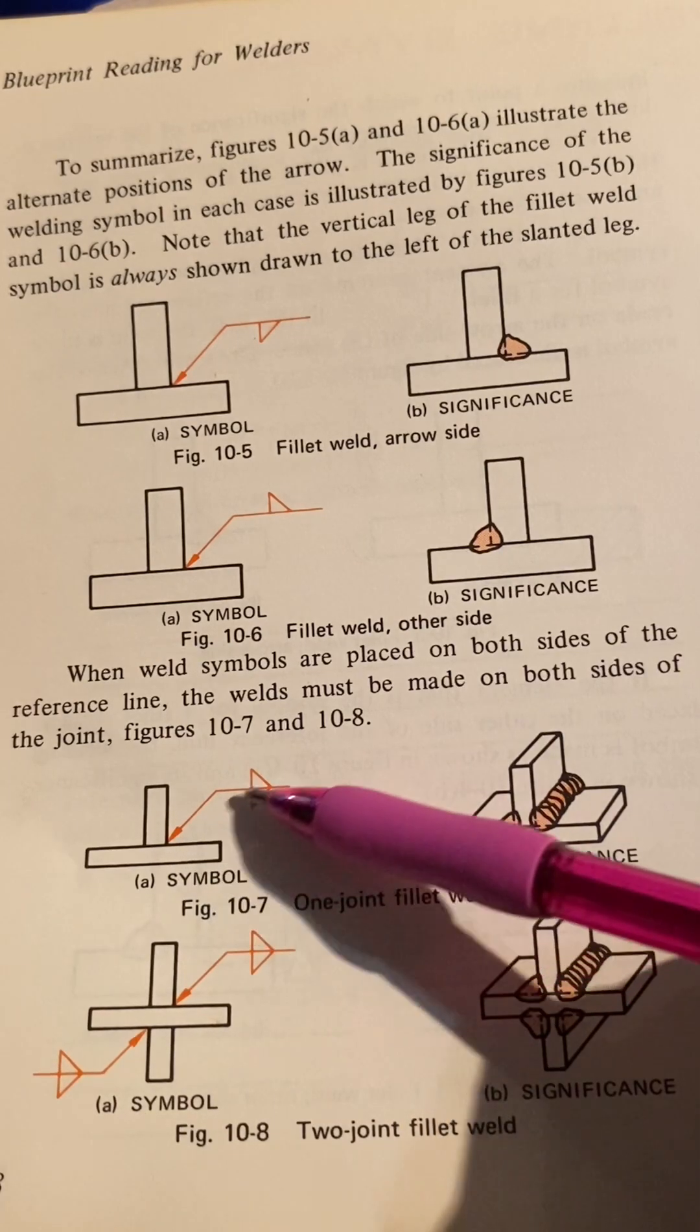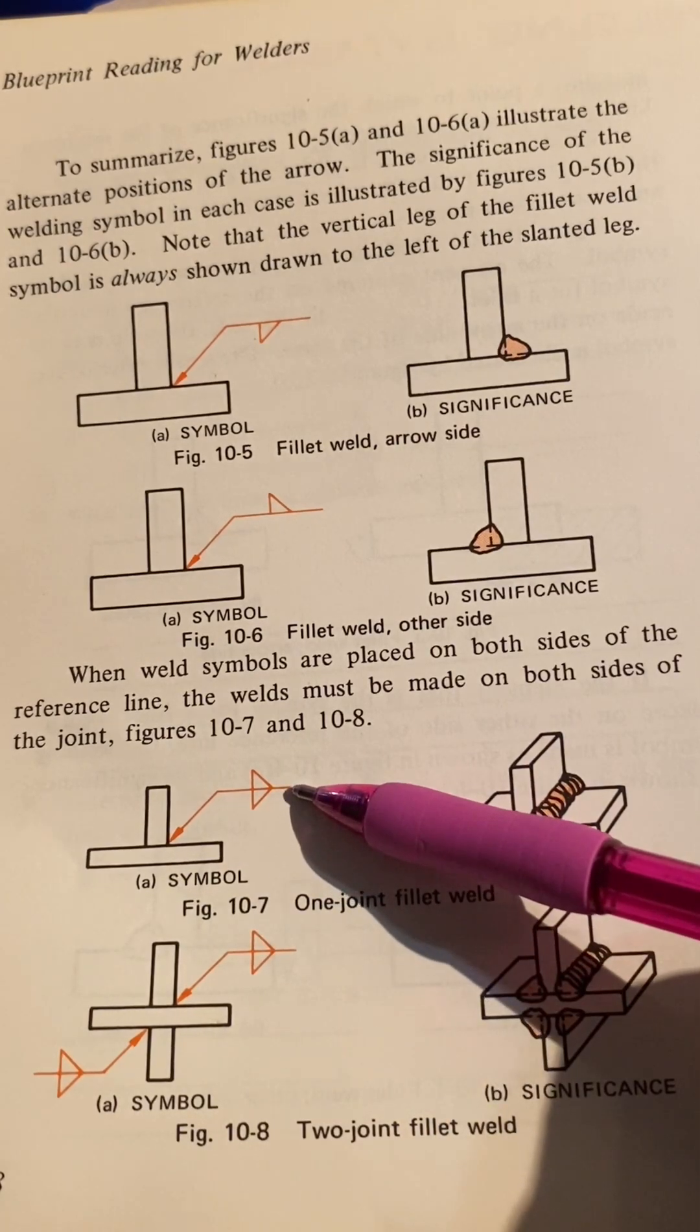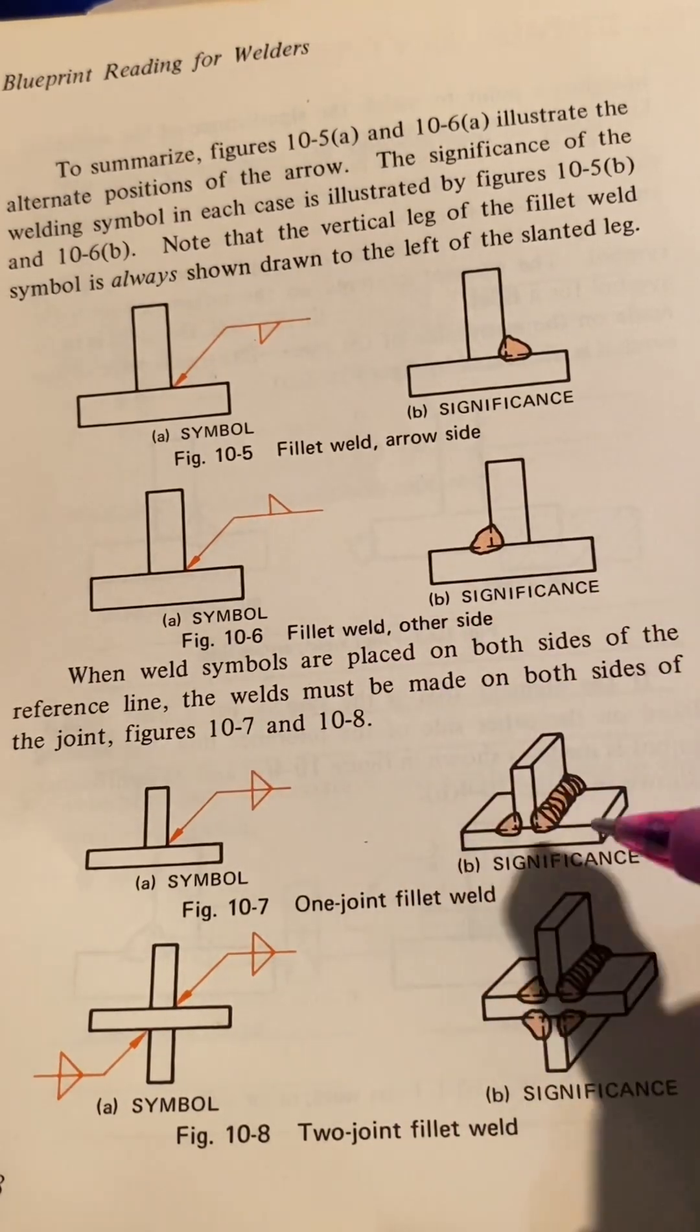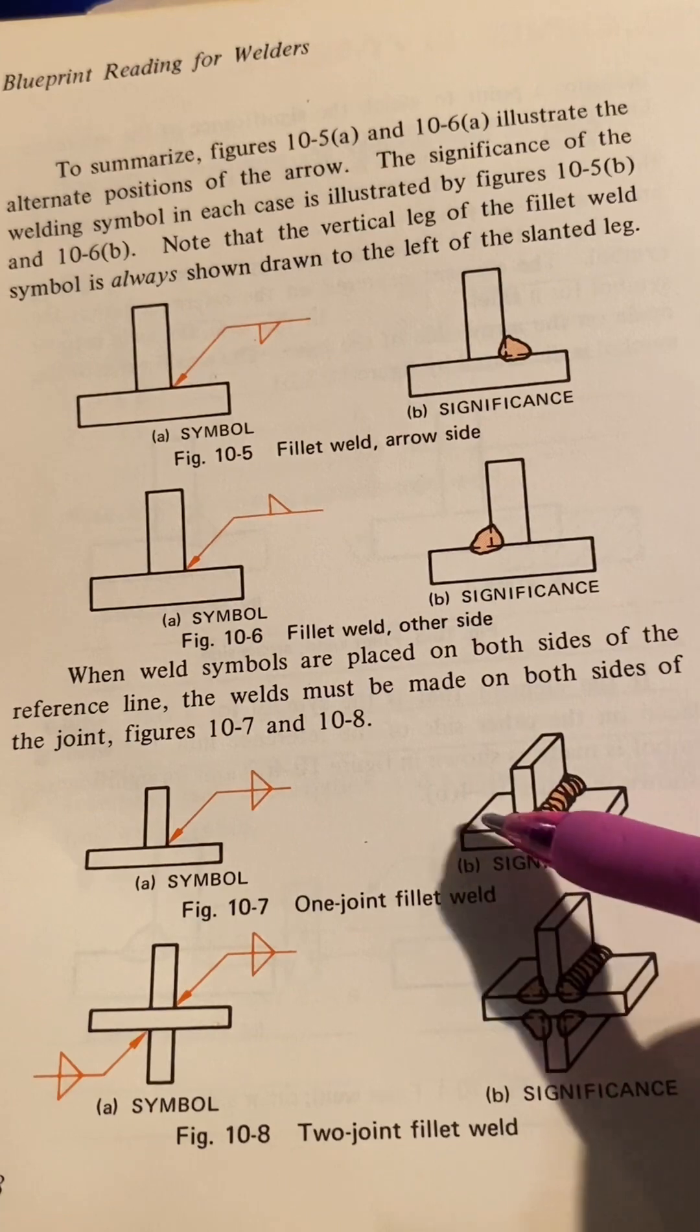So that's what it looks like. It's telling you it wants fillet welds on both sides, on the arrow side and on the other side. Arrow side, other side.